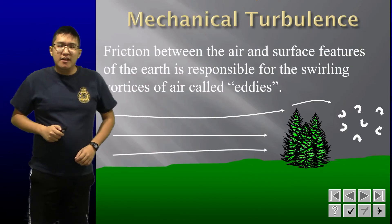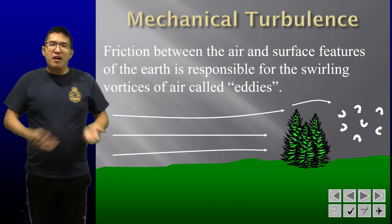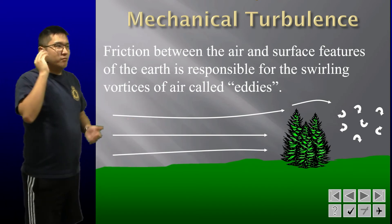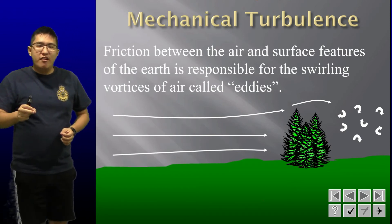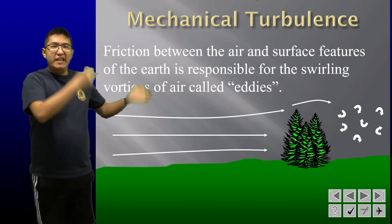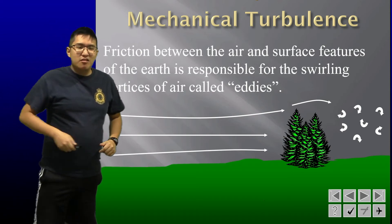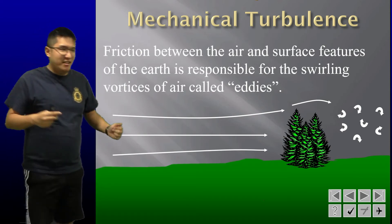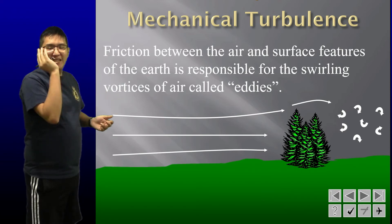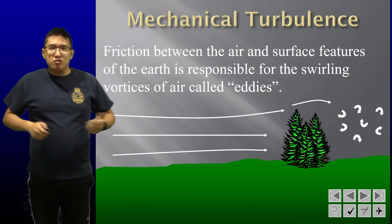Mechanical turbulence: if you look at the ground, there's a bunch of stuff on it — trees, grass, and people. The friction between the air and surface features is responsible for swirling air, vortices of air, also known as eddies — which should remind you of wingtip vortices. In general, wind starts to hit objects like buildings, trees, and people, and just swirls around them, creating turbulence closer to the ground.